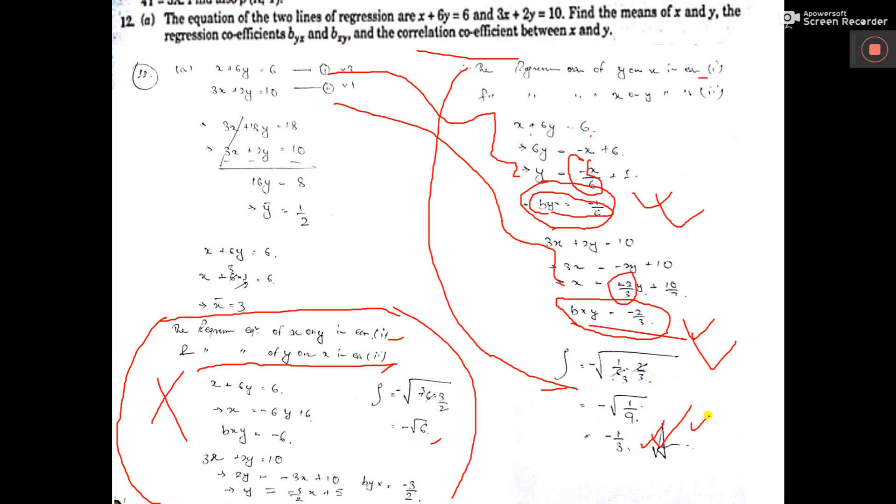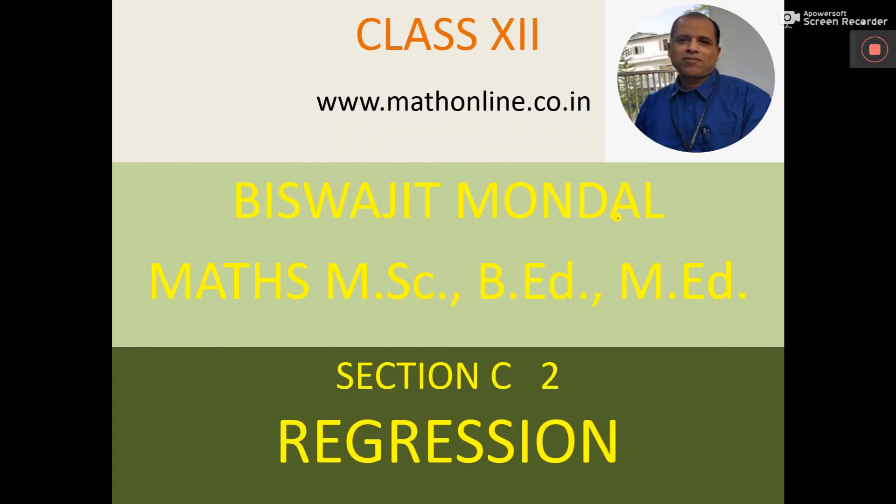Now, one may think that this is correct, so why do I do this? But actually, this one also we have to do. We have to show that in this way, if we consider, we are not getting the result. Okay? So, both the cases we have to show. That's all.